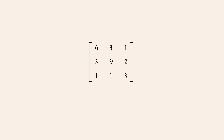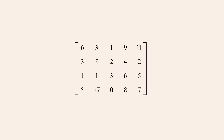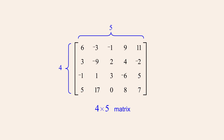The entries of a matrix are arranged in rows and columns, and a matrix can have any number of rows and any number of columns. A matrix of m rows and n columns is said to be an m by n matrix. For example, this matrix is a 4 by 5 matrix. So we say that the dimension or the order of this matrix is 4 by 5. The order of a matrix is always given as the number of rows followed by the number of columns.